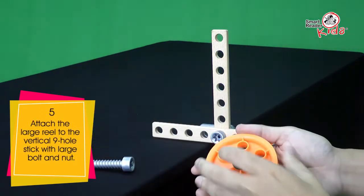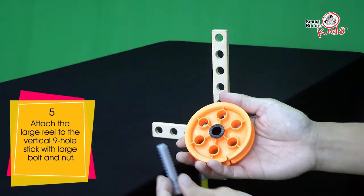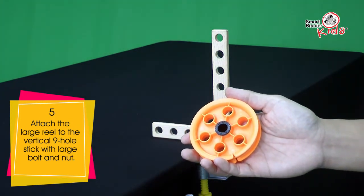Attach the large reel to the vertical 9-hole stick with a large bolt and nut.